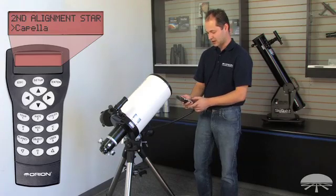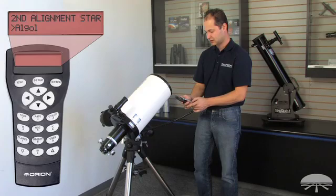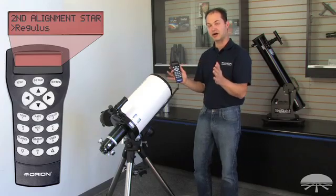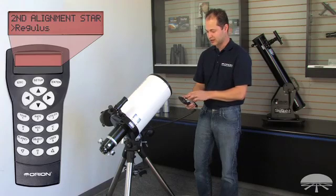So now it's asking me for my second star. And for that, I think I will choose Regulus. It's a good second star across the field of view, across the sky. The farther apart they are in the sky, the more accurate the alignment will be. So here's Regulus. I will go to that.